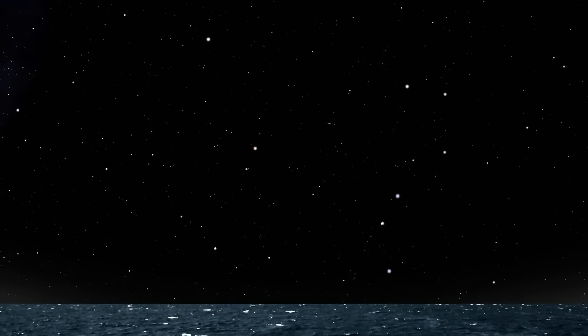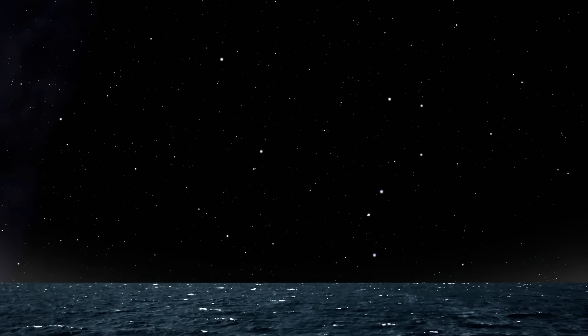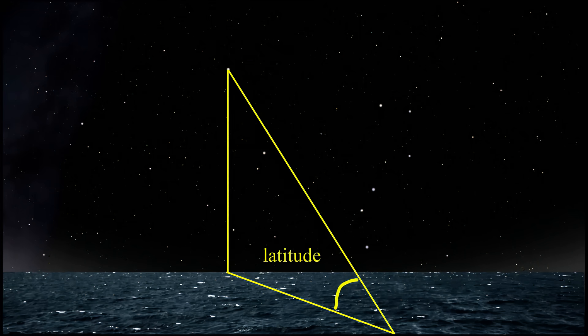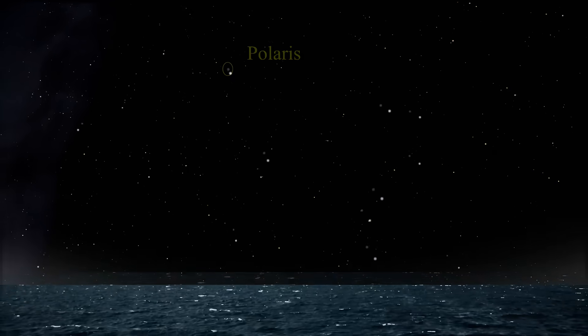Determining latitude is relatively simple. In the northern hemisphere, your latitude is the angle between the horizon and Polaris, the north star. Polaris sits apparently motionless directly above the Earth's north pole. There is an equivalent celestial method for the southern hemisphere.